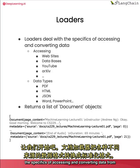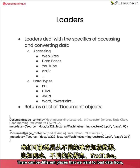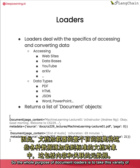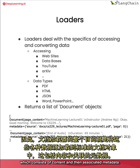Document loaders deal with the specifics of accessing and converting data from a variety of different formats and sources into a standardized format. There can be different places that we want to load data from like websites, different databases, YouTube, and these documents can come in different data types like PDFs, HTML, JSON. The whole purpose of document loaders is to take this variety of data sources and load them into a standard document object, which consists of content and then associated metadata.